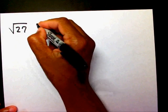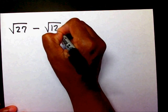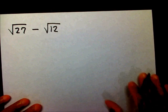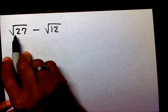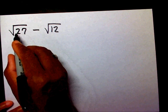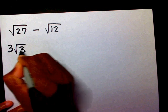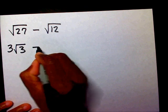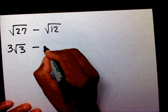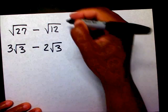Let's say I have radical 27 minus radical 12. First I need to simplify. Radical 27 simplifies to 3 radical 3, minus radical 12 which simplifies to 2 radical 3.